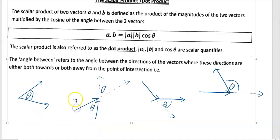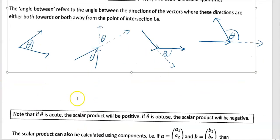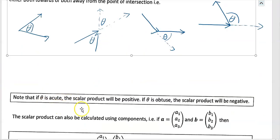Note: if theta is acute, the scalar product will be positive — that's just because cos of an acute angle is always positive. Whereas if theta is obtuse, the scalar product would be negative, and again that's just because cos theta is negative for obtuse angles.